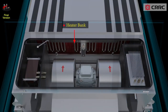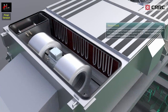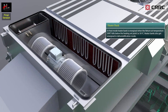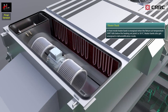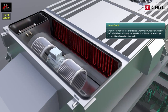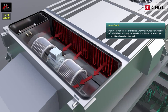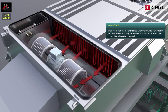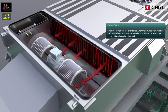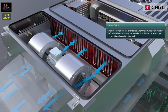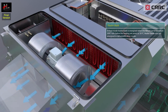The heater bank is installed on the downstream side of the cooling coil. In heat mode, the heater bank is energized when the return air temperature or RAT falls below the heating set point of 18 degrees centigrade. The heater bank also gets energized in the dehumidification mode.